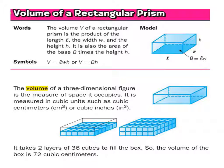Finding the volume of a prism is really just a matter of first finding the area of whatever type of prism it is. If it's a triangular prism, find the area of the triangle and then multiply it by its height. If it's a rectangle, find the area of one of the rectangles and multiply by its height. Same with pentagons, hexagons, and so forth.